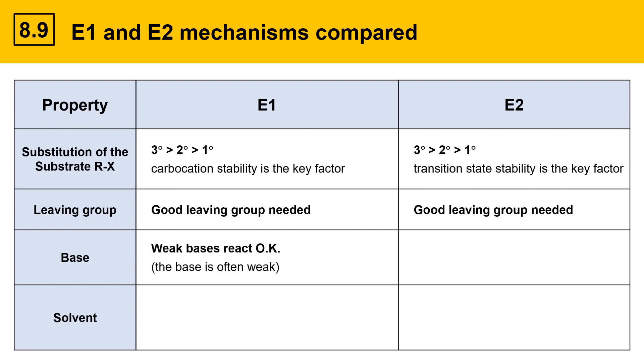For the base component, in E1, weak bases react okay. In fact, the base is usually weak for E1. For E2, though, a strong base is needed, and this is because the base deprotonates the alkyl halide in the rate-determining step. The stronger the base, the faster the reaction.